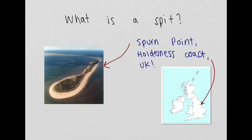Hi there. I'm here today to talk to you about what a spit is. A spit is essentially a depositional landform that you can find on the coastline in a number of different locations. You can see an example of a spit on the left hand side here. This spit in particular is called Spurn Point, which is located on the Holderness coastline in the north east of the UK.